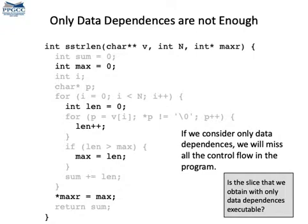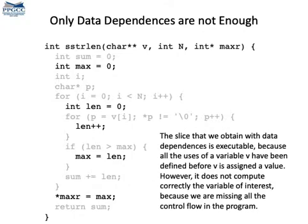Is this slice executable? Can you check if this program can actually be compiled and if it runs? The program will compile and is executable. But this program is not a correct slice of the statement 'maxR = max' down here. We are still missing control dependencies. If you take this program and see which value it deposits into maxR, you will see that this value is not the same as what the entire program would produce.